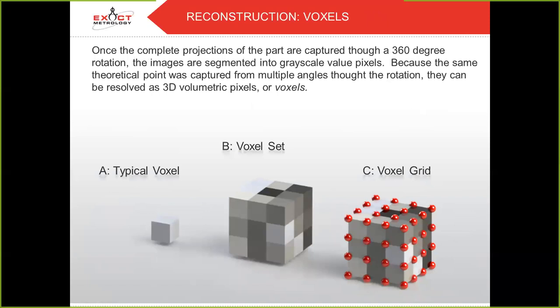And the voxels. Once the complete projections of the part are captured through a 360-degree rotation, the images are segmented into grayscale value pixels. Because the same theoretical point was captured from multiple angles throughout the rotation, they can be resolved as 3D volumetric pixels, or voxels. The 3D dataset consists of voxels — this is your second buzzword for the day after attenuation. A voxel is nothing more than a 3D pixel.